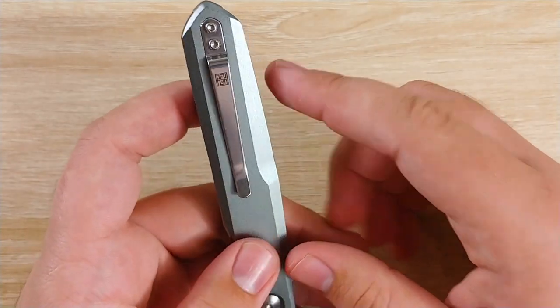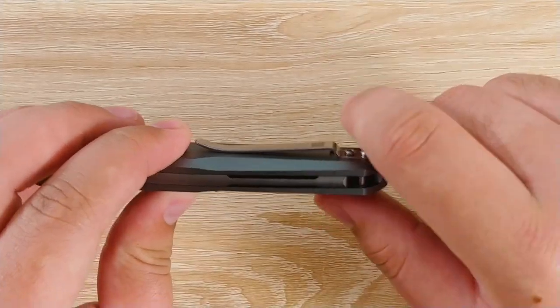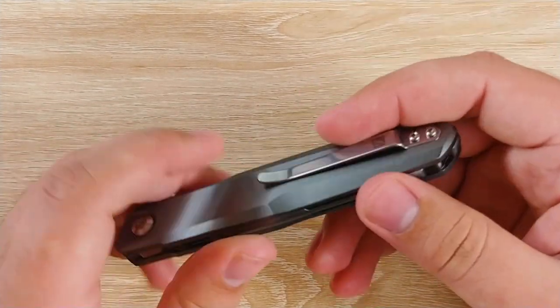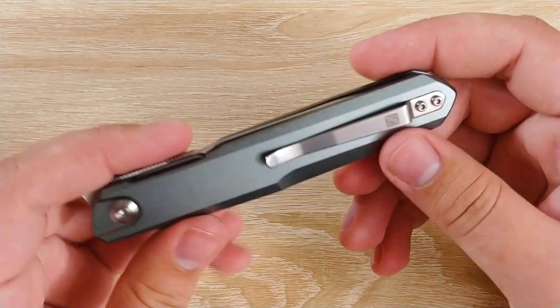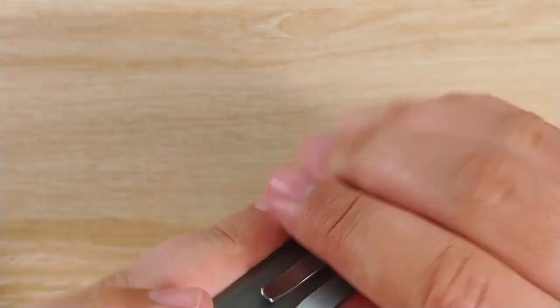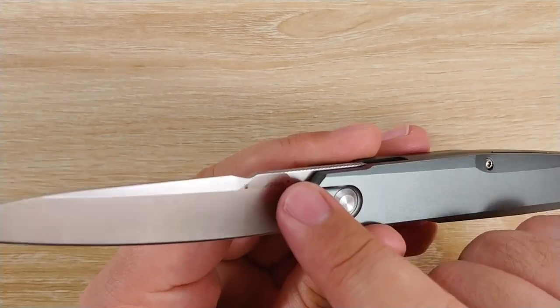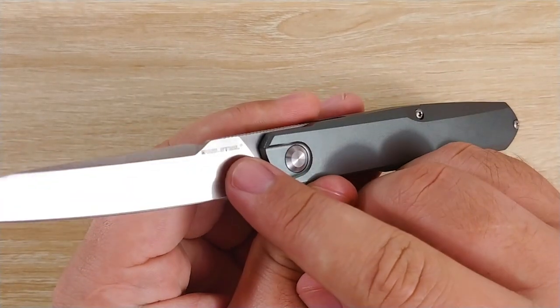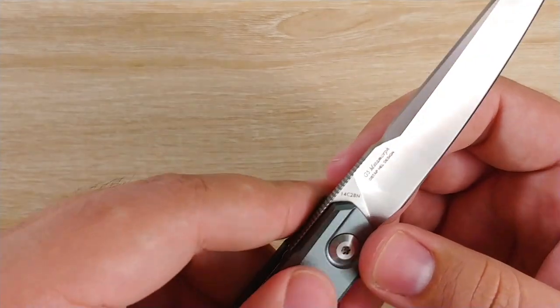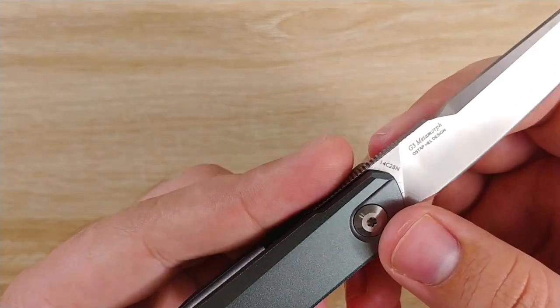The clip is very nice. It's very narrow, very slim in your pocket and leaves enough of the knife for you to grab it and pull it out. So if you're not into deep carry pocket clips, this will work really well. It has the Real Steel Knives logo on it, but it's pretty minimal. Very little branding on the blade as well. You have the Real Steel logo there. And then on the back you have G5 Metamorph and Ostap Hell Design and 14C28N, which is the steel.